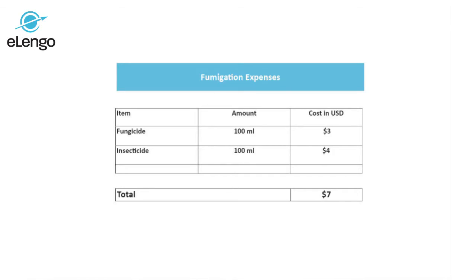For mushroom production we try as much as possible to produce organic mushrooms without using pesticide. But sometimes there are incidences whereby a farmer may incur some infection on their mushrooms. So sometimes we can incur costs for insecticide, pesticide, and fungicide, whereby we try to eliminate the fungal infections that can affect the mushroom crop as they grow. For fungicide, a hundred ml can incur a cost of four US dollars.